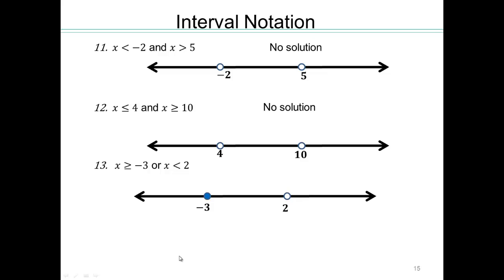Finally, for 'or': x greater than or equal to negative 3 OR x less than 2. That means you can either be above negative 3 — everything on that side — or below 2, going down. When you combine both, the whole number line is covered. Even though 2 is not included in the 'less than 2' part, it gets included because it's above negative 3. So the answer is all real numbers: negative infinity to infinity with round brackets.